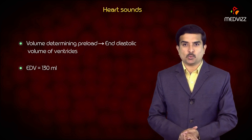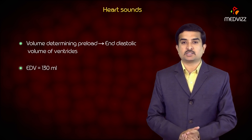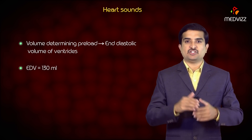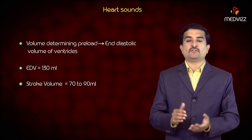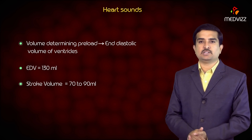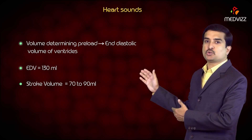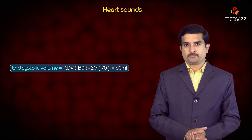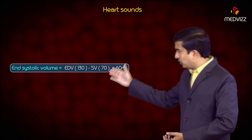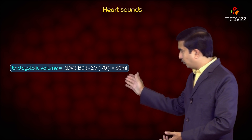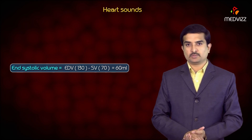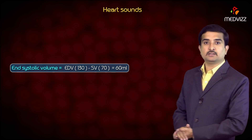The EDV is approximately 120 to 130 ml; for this class, we will remember it as 130 ml. The stroke volume — the amount of blood ejected by the ventricle per beat — is 70 ml in normal individuals, approximately 70 to 90 ml. The end-systolic volume can be calculated as end-diastolic volume minus stroke volume: 130 minus 70 equals 60 ml. So the end-systolic volume is 60 ml.